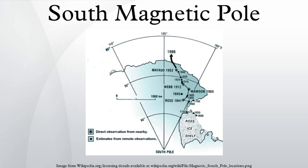The approximate position of the pole on January 16, 1909 was 72.25 degrees S, 155.15 degrees E.